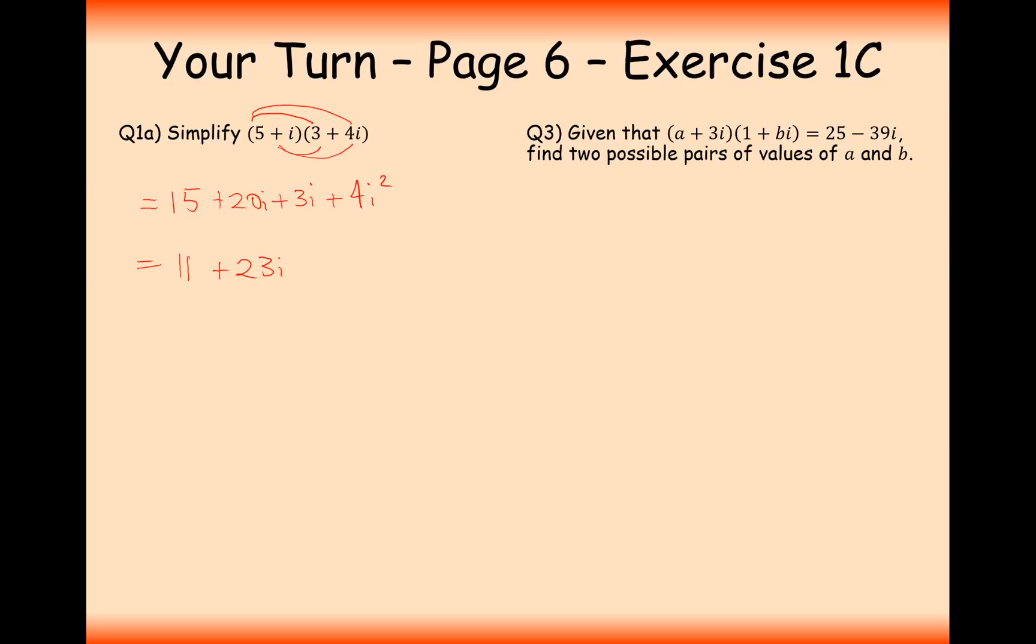Question 3 here now is expanding brackets, where we've got some algebra inside the brackets here. So let's expand the brackets, and then hopefully we'll set our answer equal to 25 minus 39i. So we're going to expand the brackets and get a plus abi plus 3i, and then it's going to be plus 3bi squared. Now this thing here is going to equal 25 minus 39i eventually, but first of all, what I'm going to do is simplify the i squared to minus 1. So it's going to be a minus 3b,